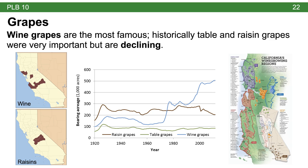When we indicate that grapes are the most economically important agricultural product in California, most people probably think about wine grapes. California is really famous for its wine grapes, but historically it's actually been table and raisin grapes that are most important. Those are in sharp decline over recent years, while wine grapes are quickly accelerating. California has some of the most famous wine regions in the world with varying types of soils and climate conditions amenable to certain grape varieties.